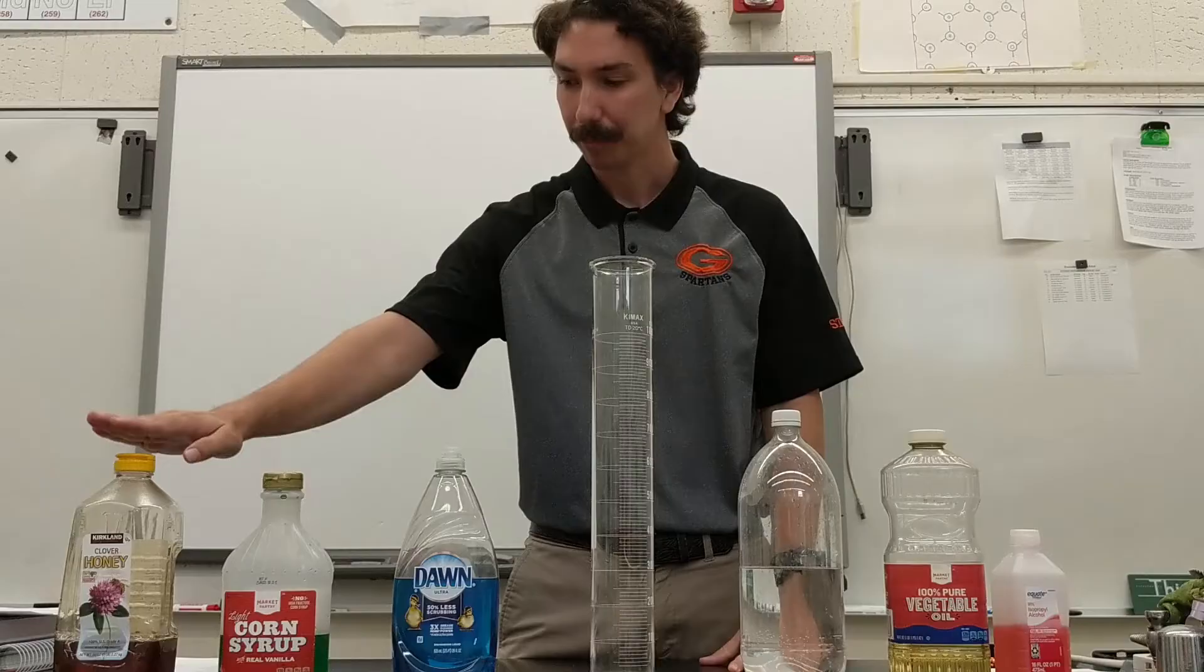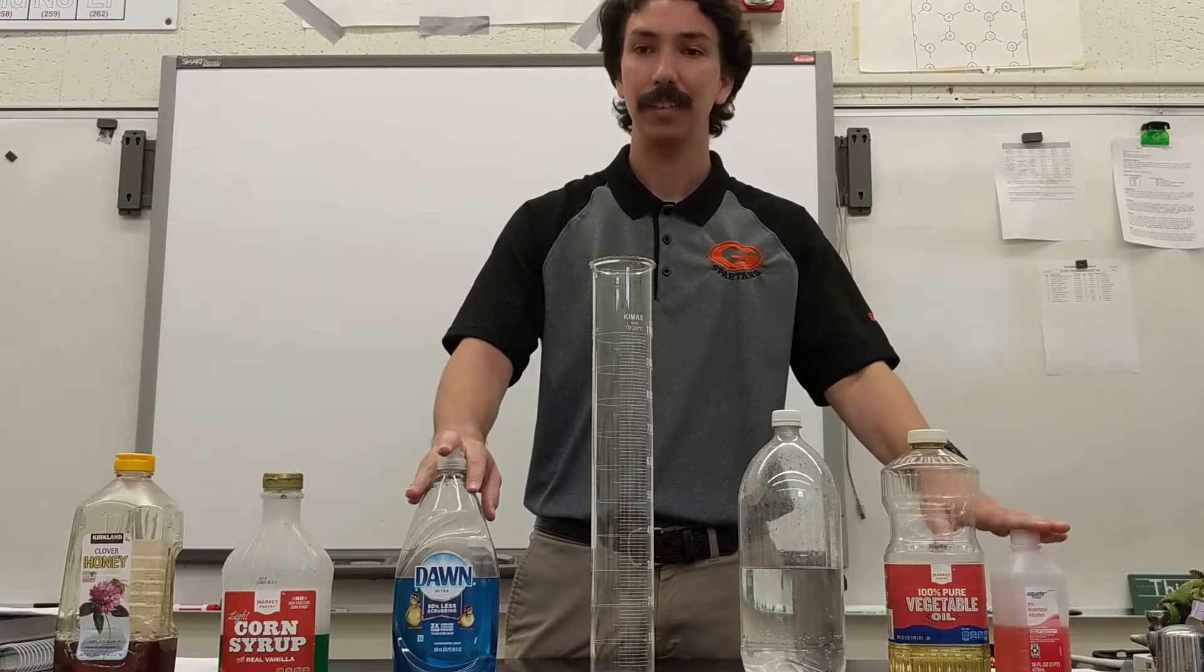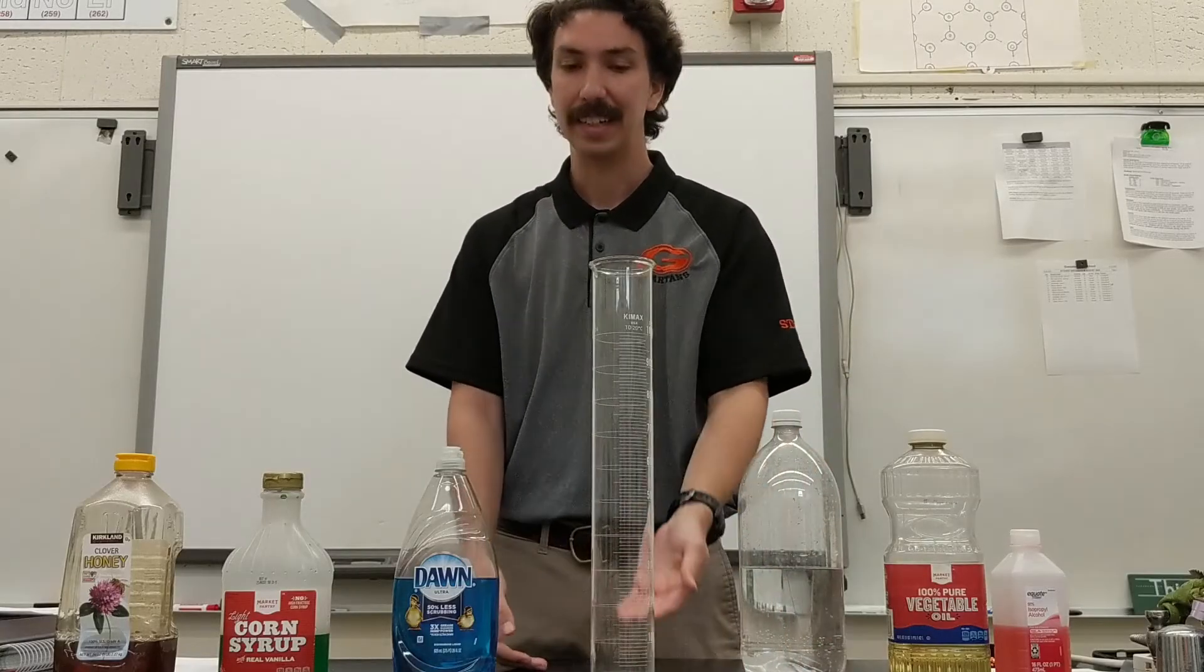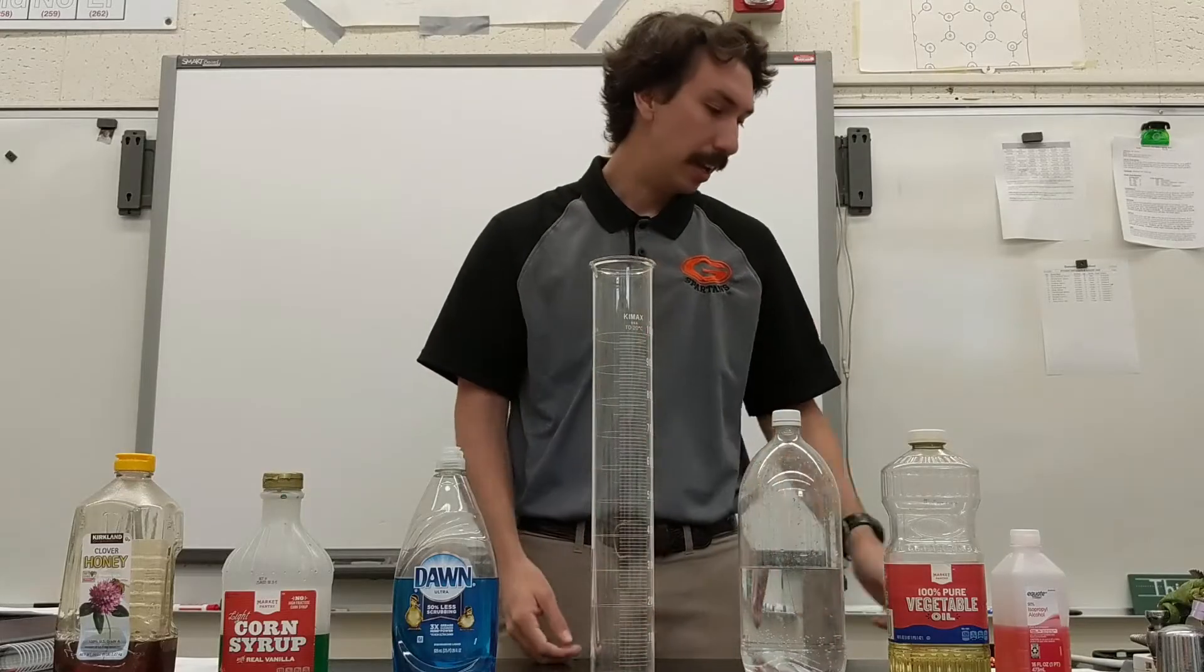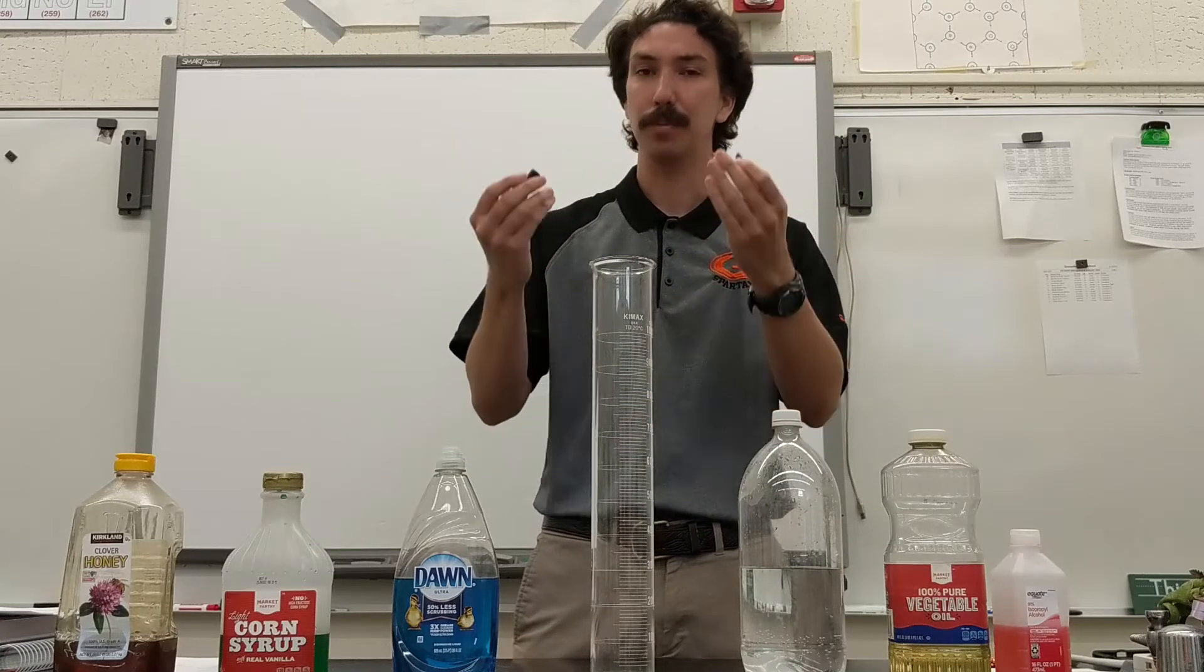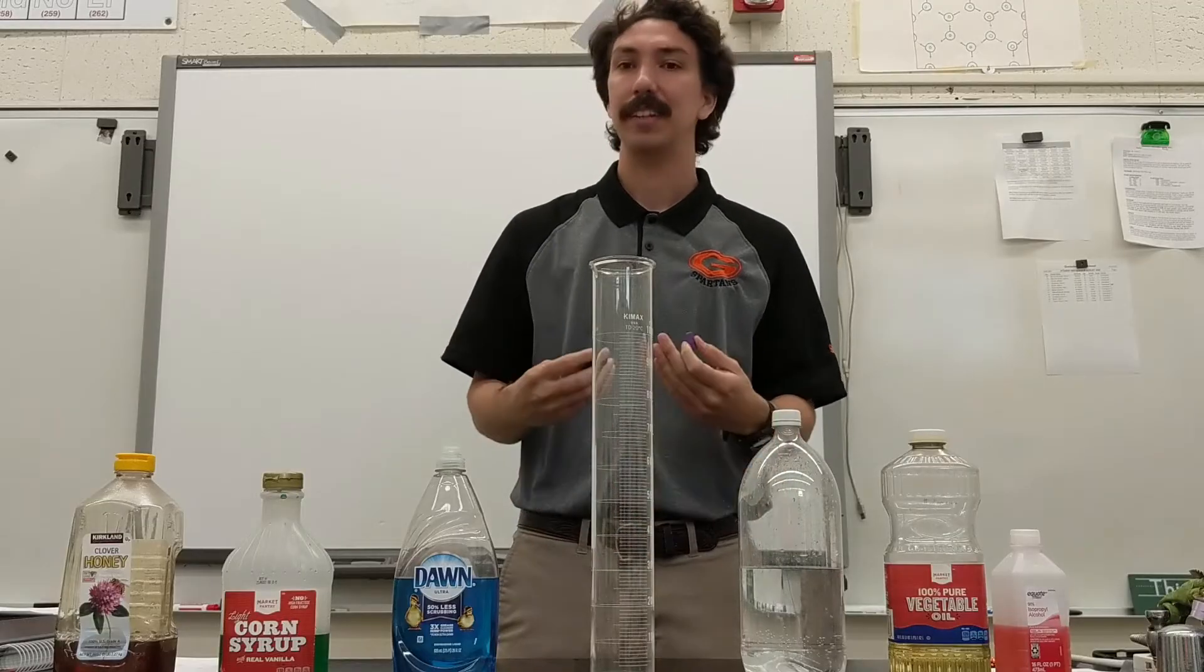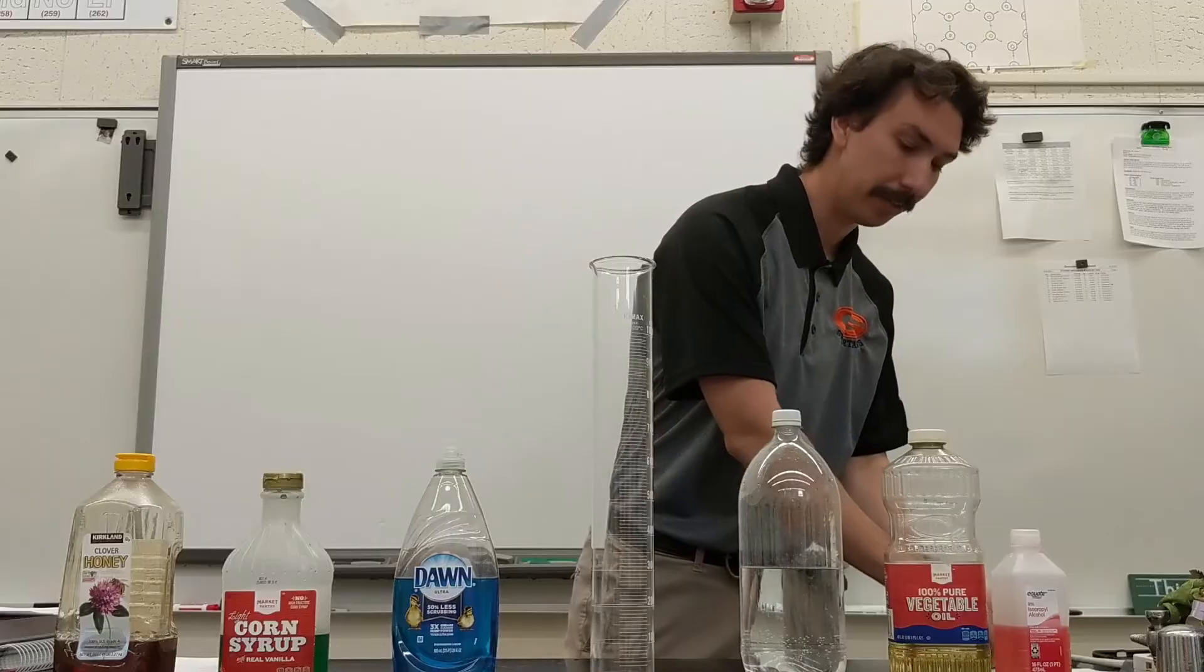So we have here six different liquids, all of different densities. And we're going to make a density column with the most dense liquids on the bottom and the least dense liquids on the top. And then we can drop in different items to check their densities. So if it's more dense than one of the liquids, it will sink to the bottom of it. But if it is less dense than one of the liquids, it'll float on top of that liquid.